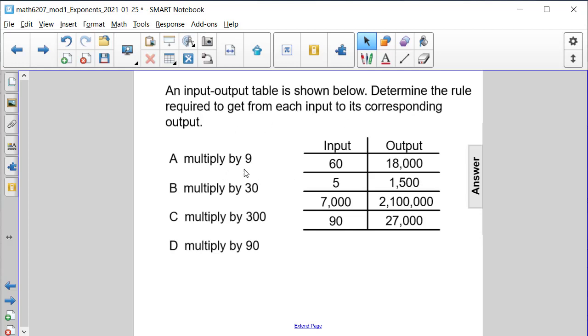Is it A multiplied by 9? Is it B multiplied by 30? Is it C multiplied by 300? Or is it D multiplied by 90?